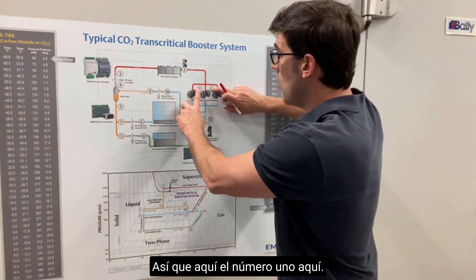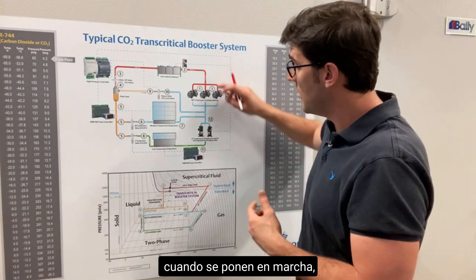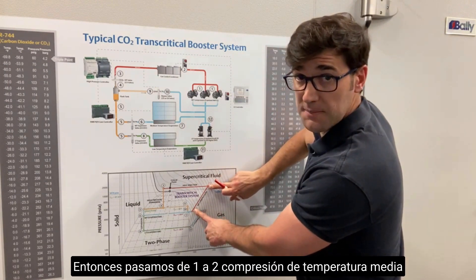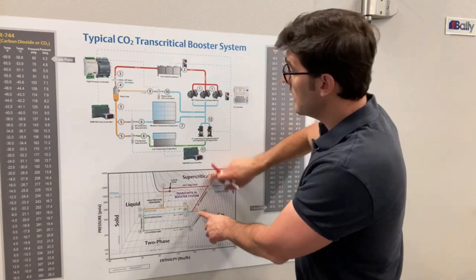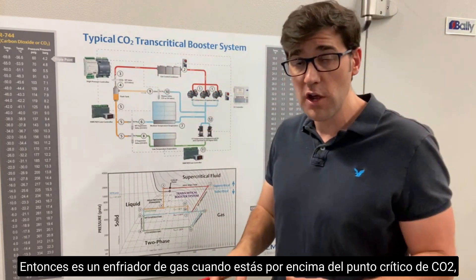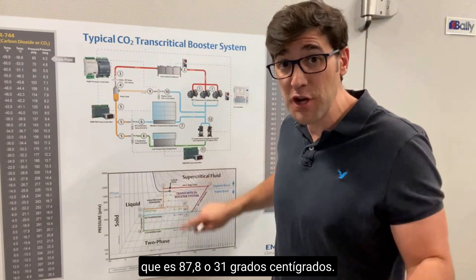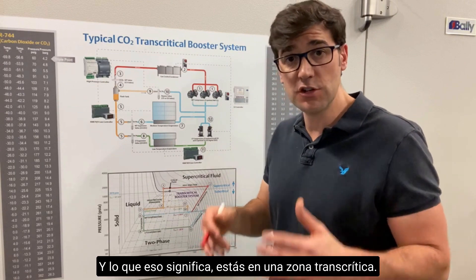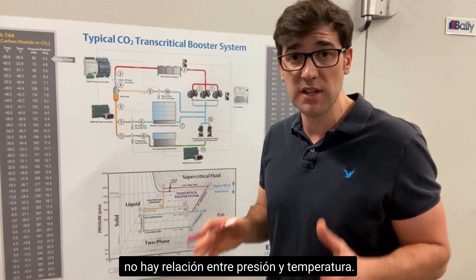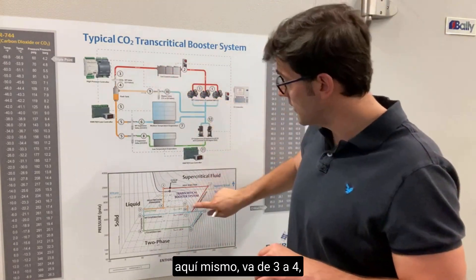Number one here represents the medium temp compressors — Copeland's 4MTLS compressors. From one to two is the discharge, so we go from one to two through medium temp compression into what we call a gas cooler or condenser. It's a gas cooler when you're above CO2's critical point, which is 87.8°F or 31°C, meaning you're in the transcritical zone where CO2 is a supercritical fluid with no pressure-temperature relationship.